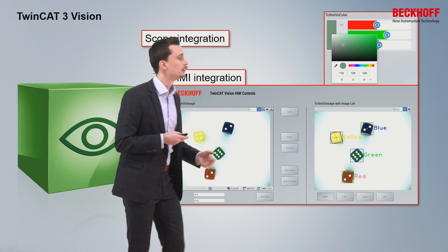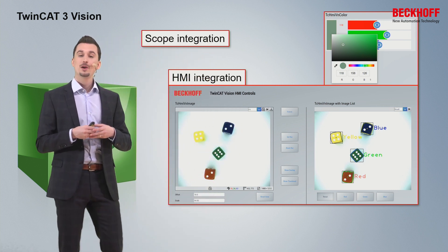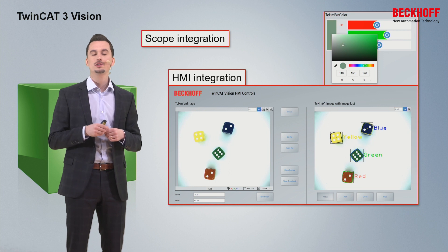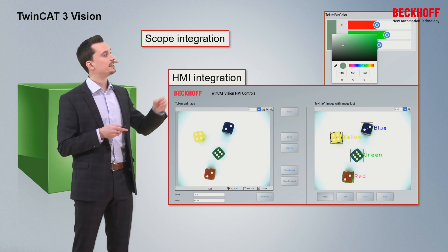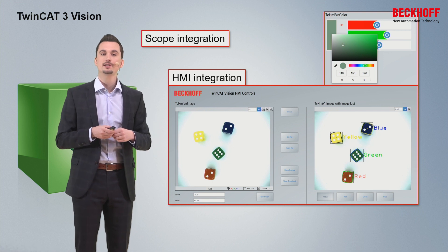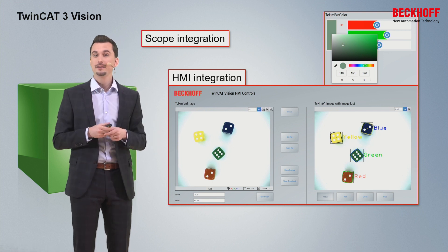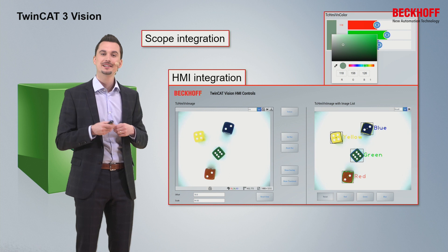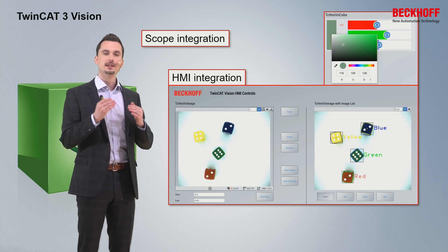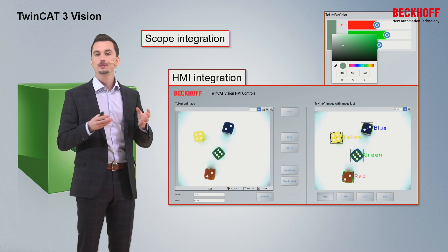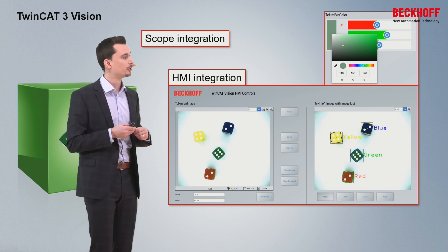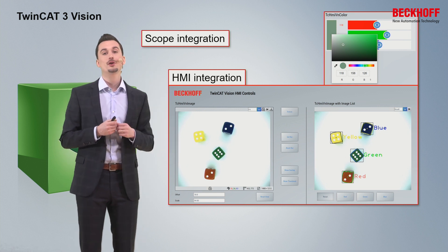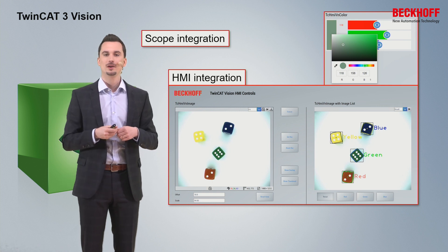In addition, on the lower side you have information about the current cursor position and also the color code at that position. You can use a color control to display this color, and also use this control to easily change the lower or upper limit of a color which you would like to detect with the help of vision — for example, if you would like to detect the color green.